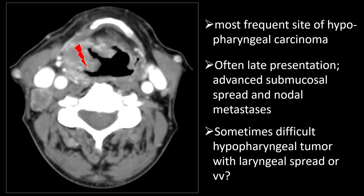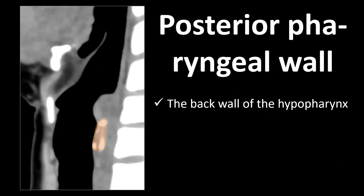The piriform sinus is the most frequent site for hypopharyngeal carcinomas. These often present late, and when discovered there is often advanced submucosal spread, which can extend into the larynx or even the esophagus. Because this region has a rich lymphatic supply, there are often lymph node metastases. In advanced cases it can be quite difficult to distinguish a hypopharyngeal tumor that has spread into the larynx from a laryngeal tumor that has spread into the hypopharynx.